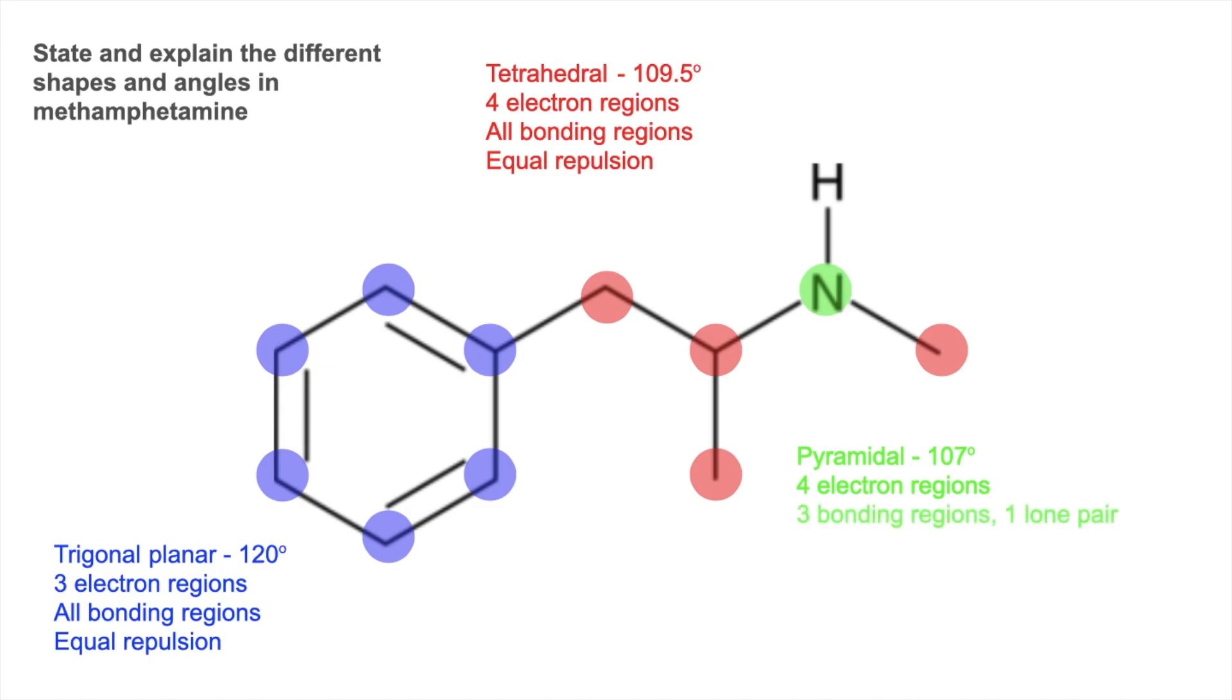We've got three bonding regions, which you can see. But there's also that lone pair. So because you've got a lone pair in there as well, you have unequal repulsion. And I would always try and get the repulsion order in.